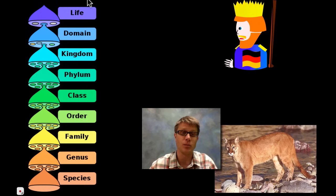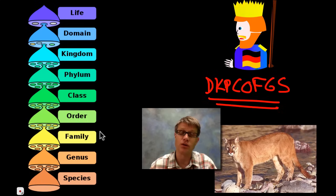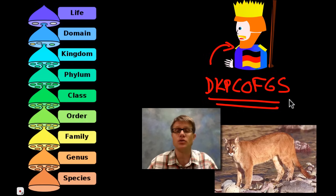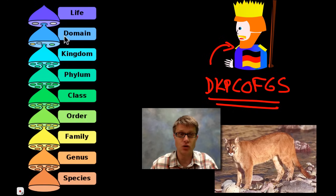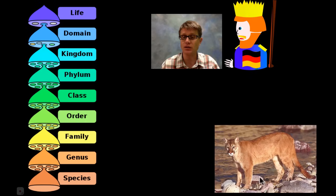We classify life from the broadest level all the way down to species. If you've been in biology you know this mnemonic: 'Dumb King Philip came over from German soil.' That helps you memorize the divisions: domain, kingdom, phylum, class, order, family, genus, species. When we talk about the scientific name, we're referring to the last two — genus and species.